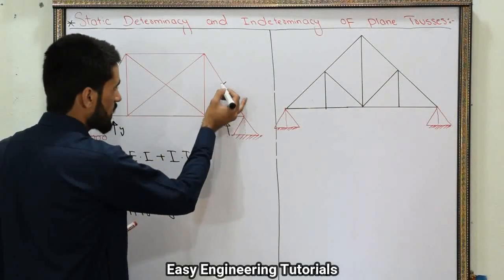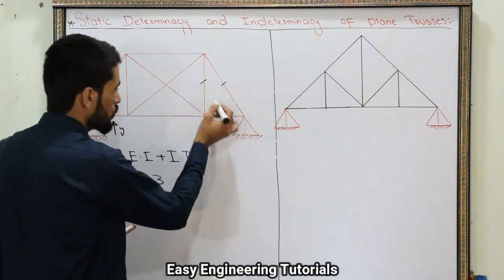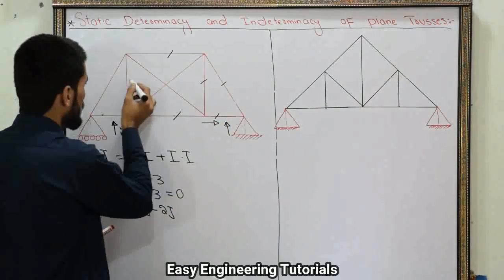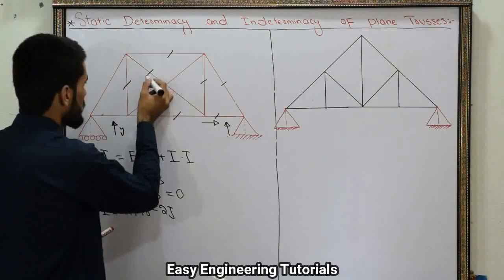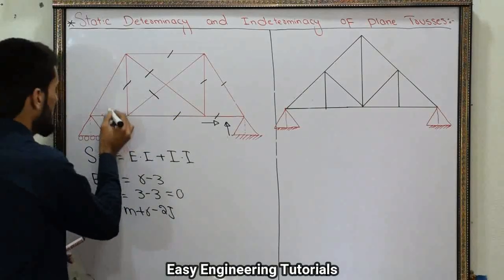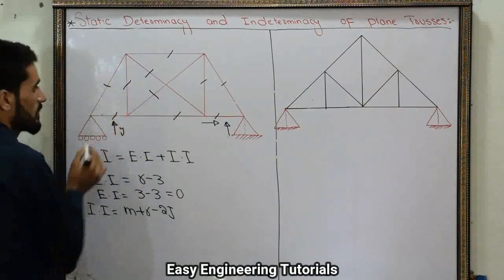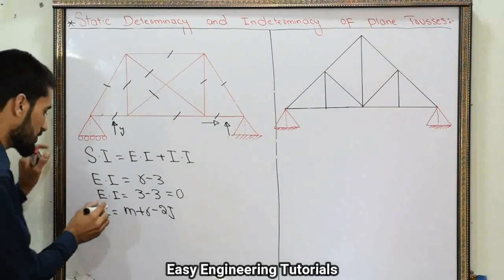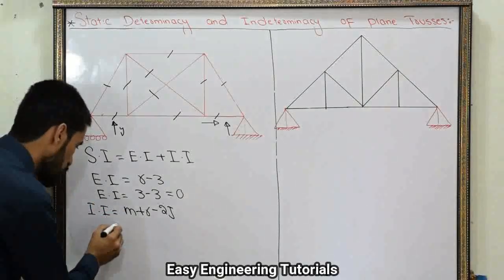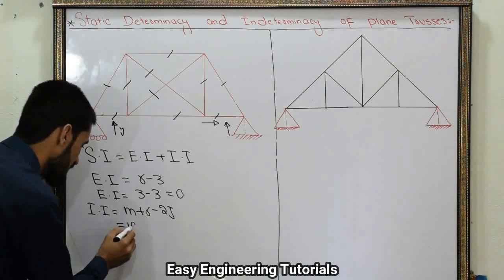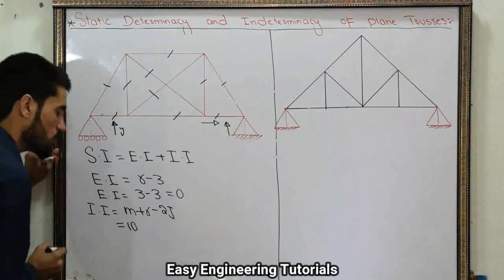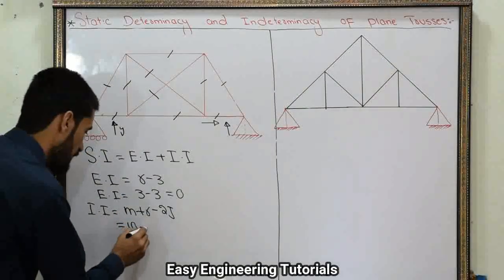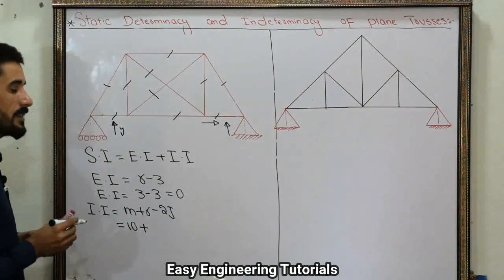Now static indeterminacy equals external indeterminacy plus internal indeterminacy. External indeterminacy equals 0. Internal indeterminacy equals M plus R minus 2J. In this truss the number of members M is 10.